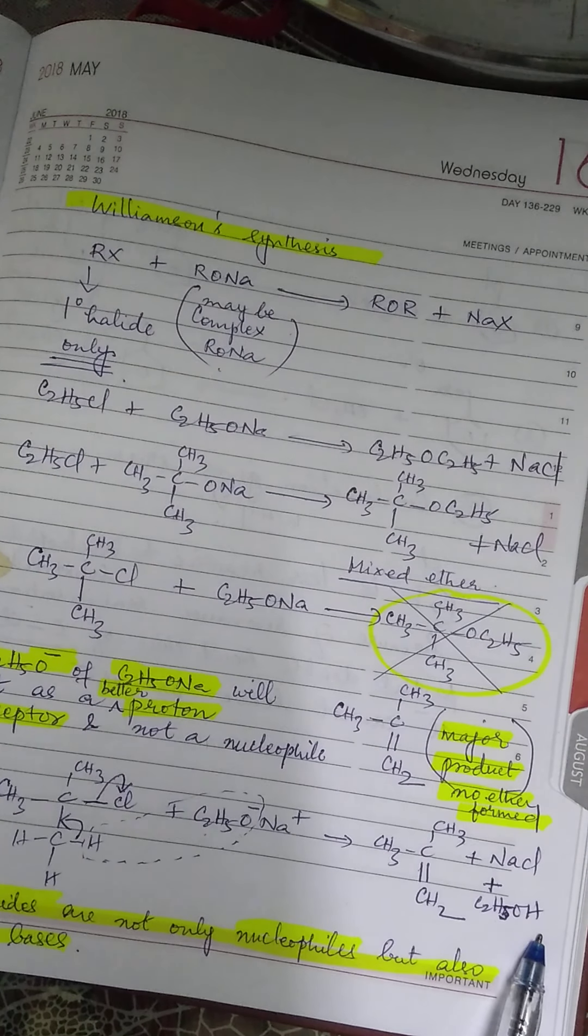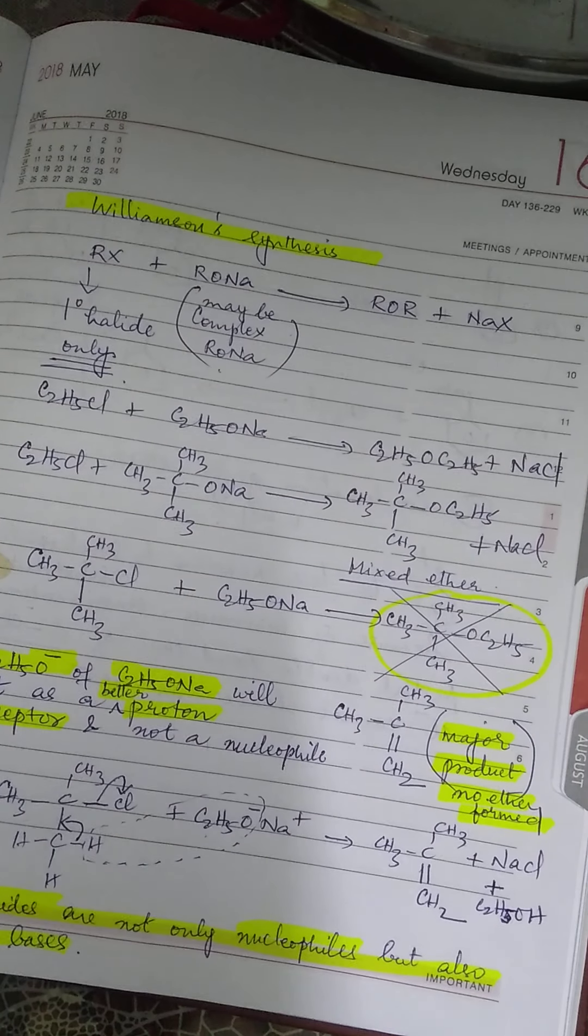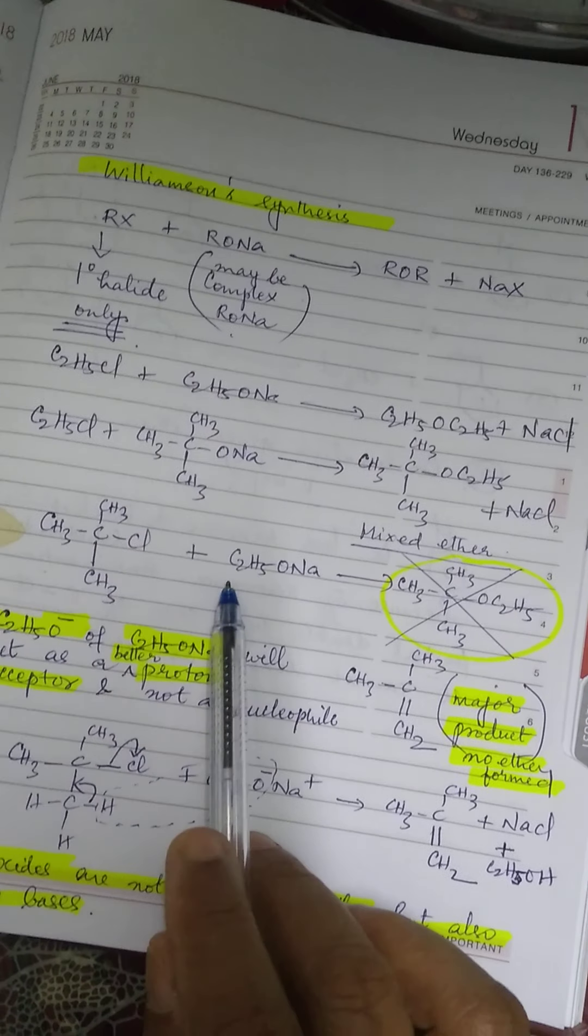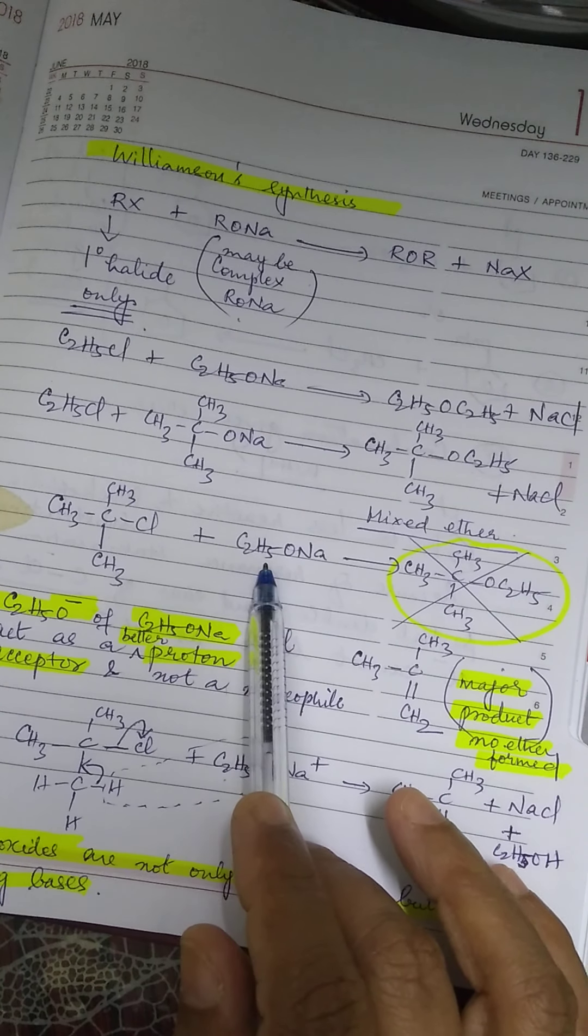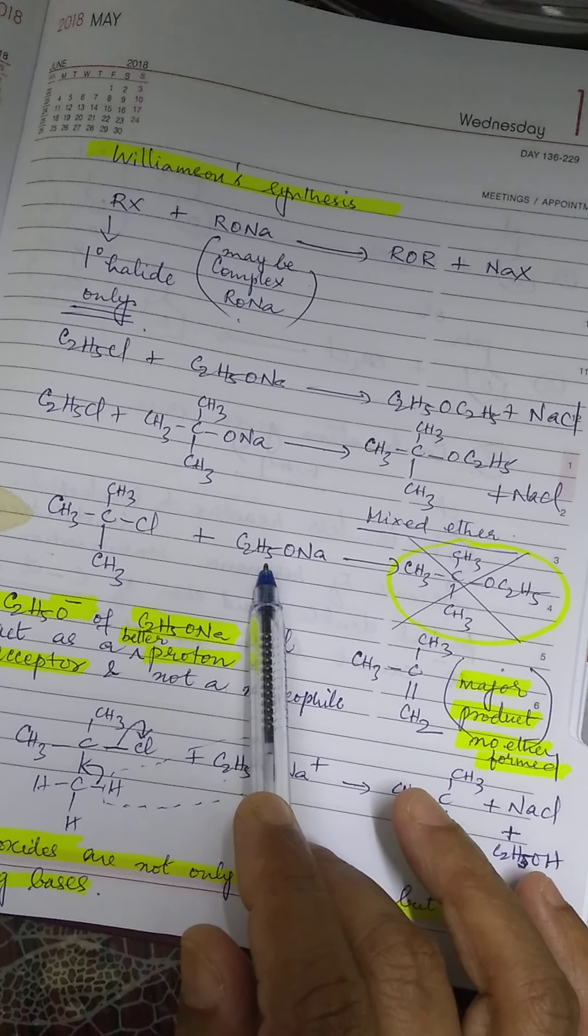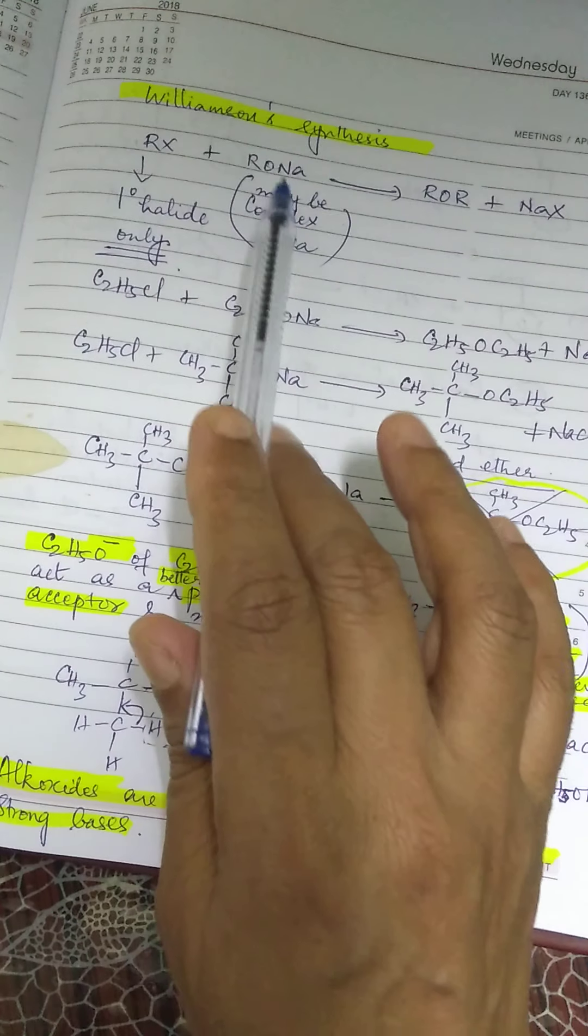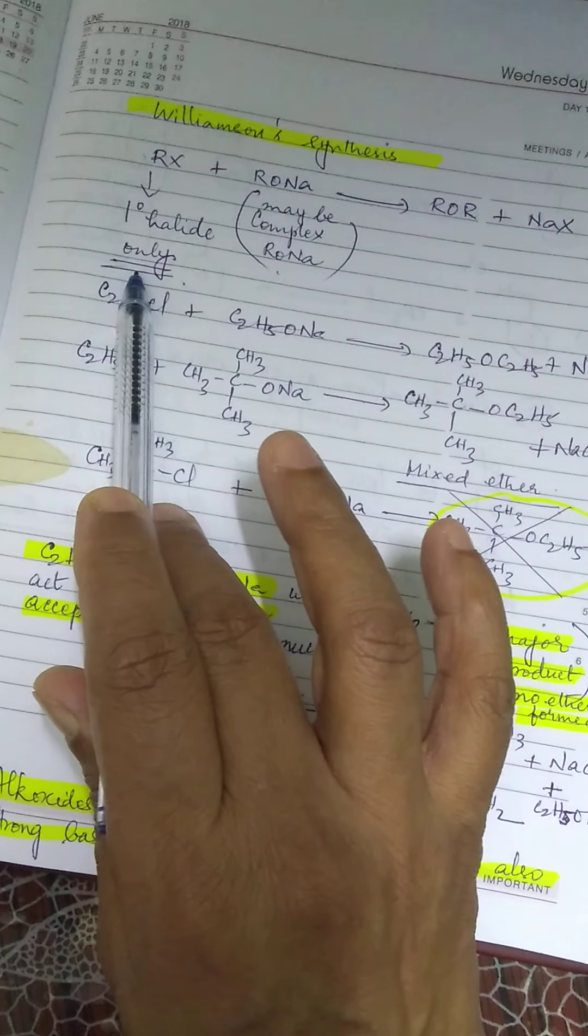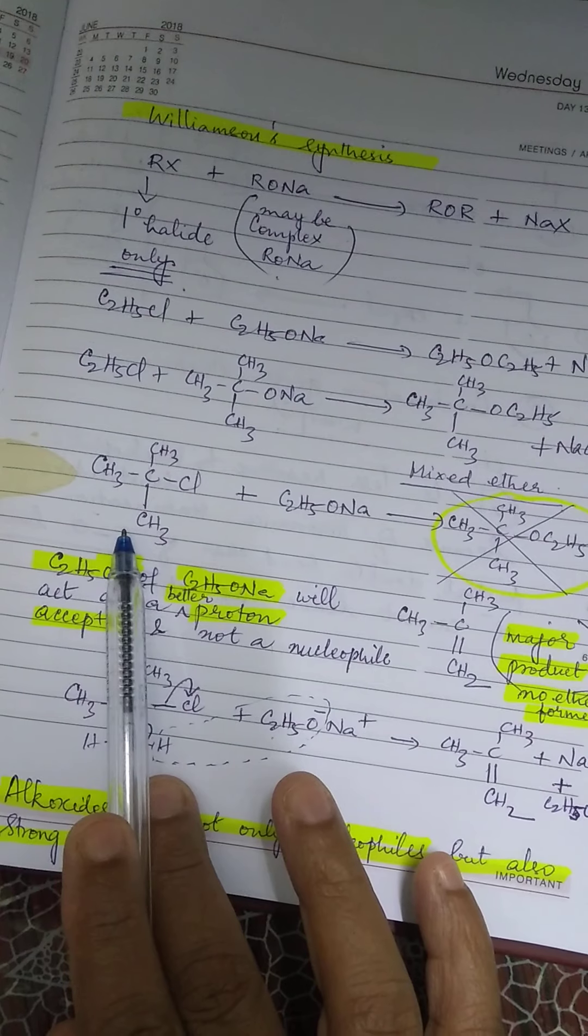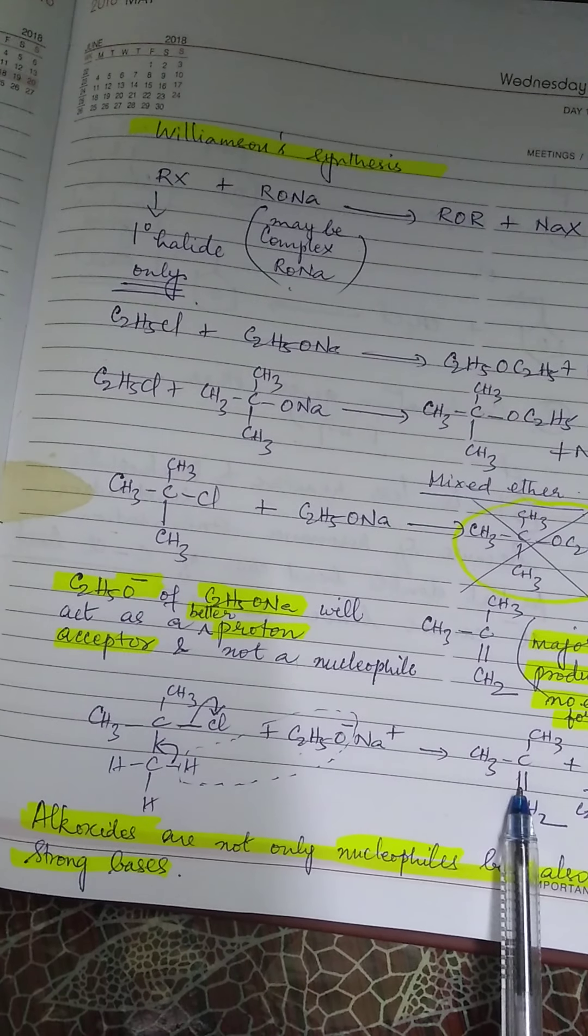So, here what has happened? Elimination has taken place. Elimination has superseded substitution when the RONa is with a simple R group. This will better act as a base rather than a nucleophile. That is why we say, you can take a bulky RONa, but RX should always be primary. If it is a tertiary halide, then this will be more favorable towards becoming an alkene.